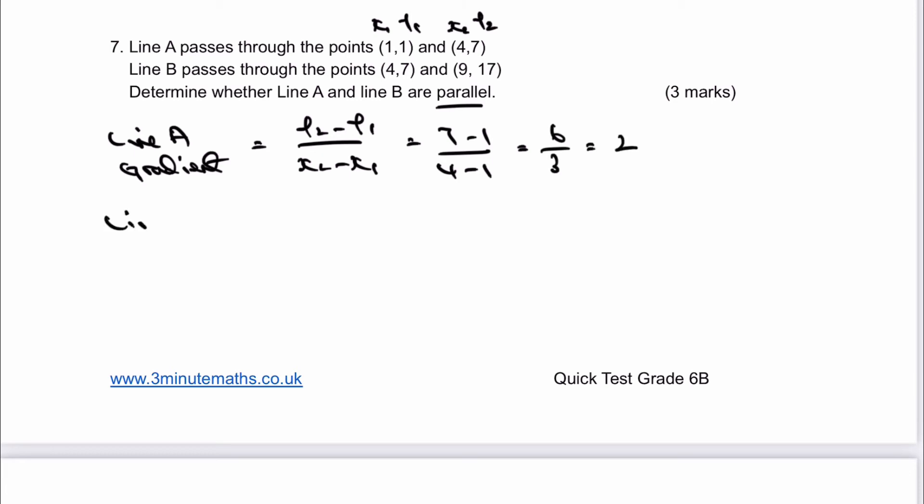We can use the formula that line A gradient equals y2 minus y1 over x2 minus x1. It's just a case of taking these coordinates of 7 minus 1 divided by 4 minus 1 as well. That's going to give me 6 over 3, which is 2. If we do exactly the same with line B gradients, that's going to equal y2 minus y1 over x2 minus x1, which is 17 minus 7 divided by 9 minus 4, which is 10 over 5, which is also 2.